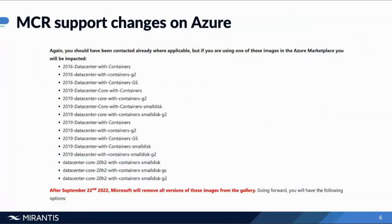Previously, Microsoft had a partner agreement with Mirantis to distribute Mirantis Container Runtime on its Windows Server and Azure equivalents. As announced in late 2021, Microsoft has chosen not to continue that agreement with Mirantis, through which Windows Server users would receive built-in licensing and support for MCR with runtime support provided by Mirantis.